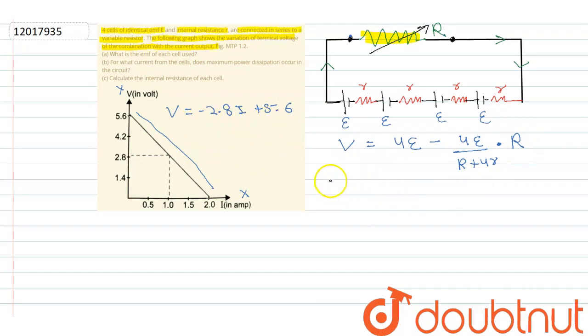If we use the equation, the value of 4E when current is zero will be 5.6. So from here, the value of E comes out to be 1.4V.